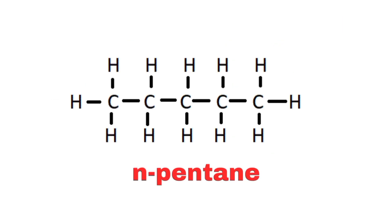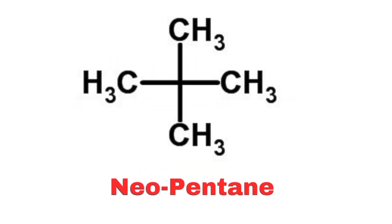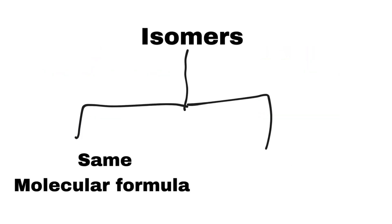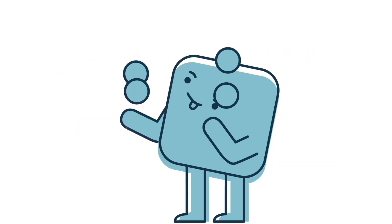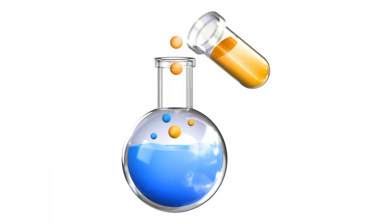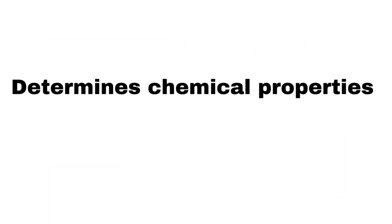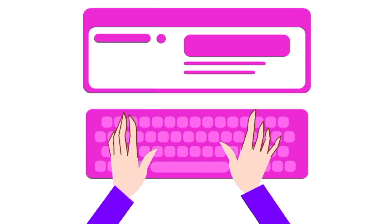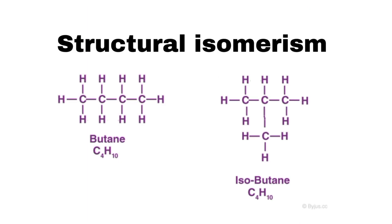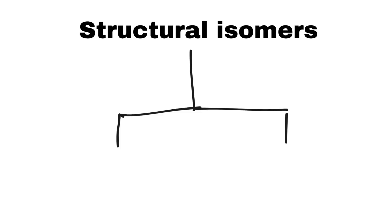Isomerism refers to the phenomenon where two or more compounds share the same molecular formula but differ in their structures or spatial arrangements. These different forms are called isomers. Isomerism is significant in organic chemistry because the structure of a molecule largely determines its chemical properties and reactivity. There are several types, the most important of which include structural isomers and stereoisomers.